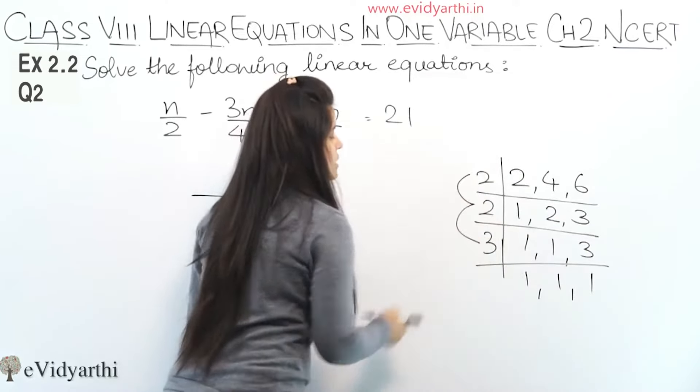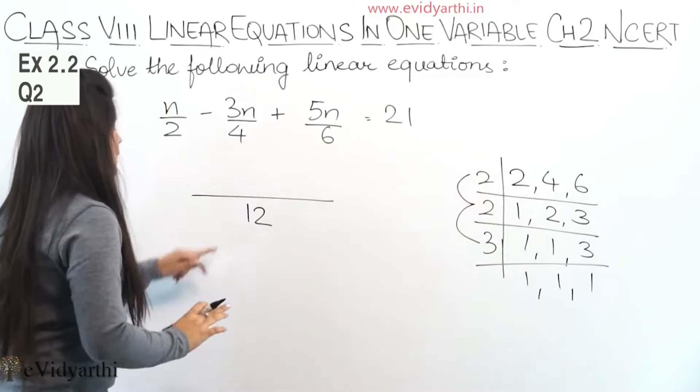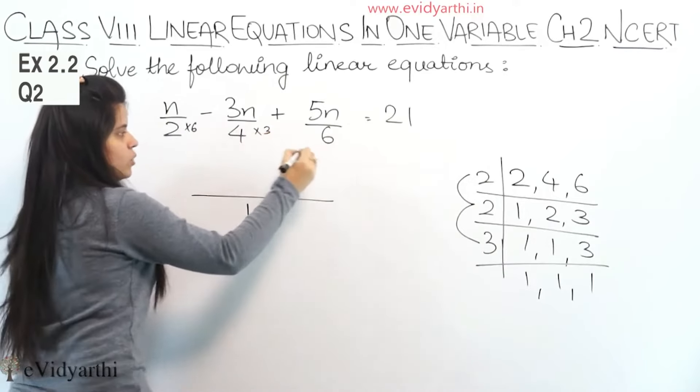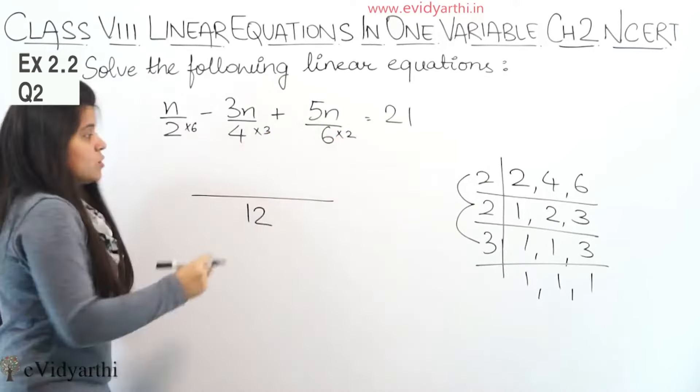So 2, 2's are 4, 3's are 12. So 12 is the LCM. In 2 ki table mein 12, times 6. In 4 ki table mein, times 3. In 6 ki table mein, times 2.